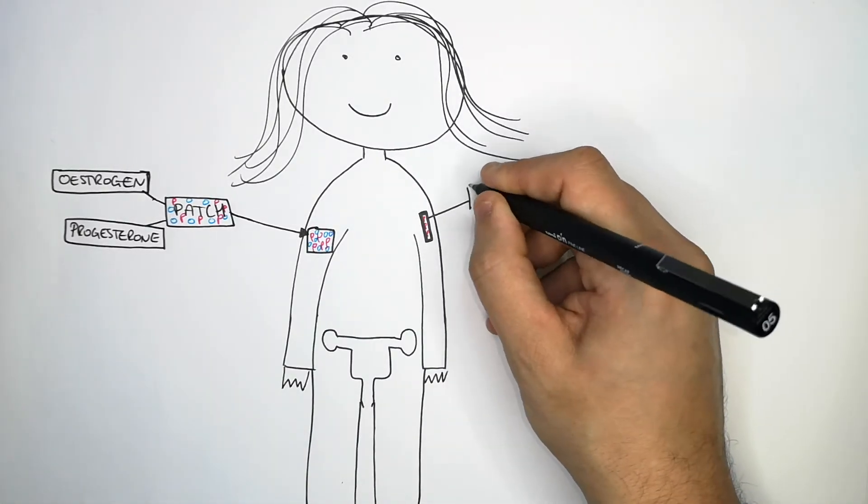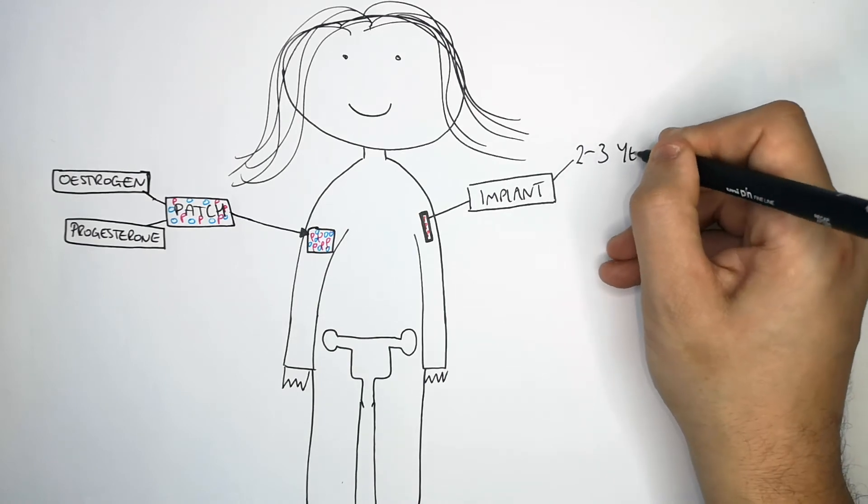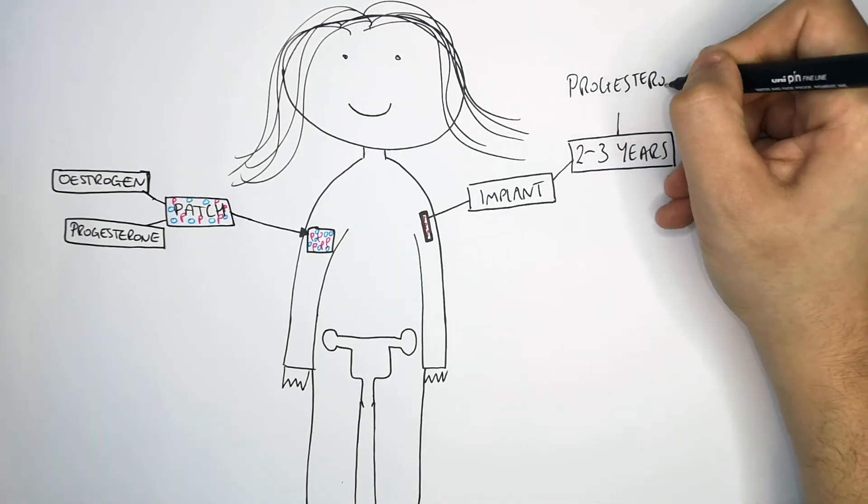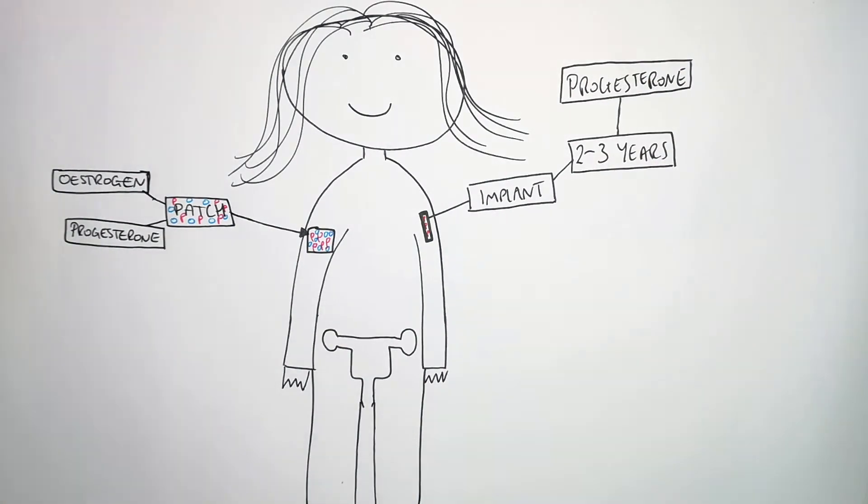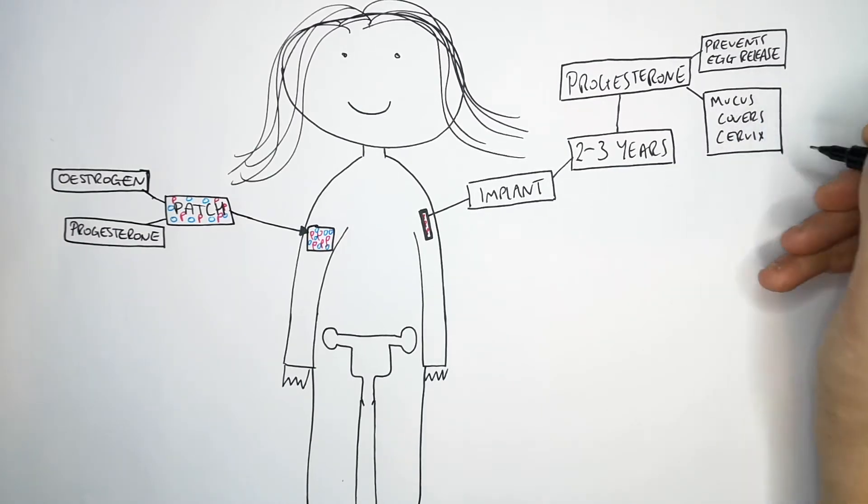The implant is implanted into the arm of a female and it contains progesterone which is continuously released for two to three years. This constantly high progesterone level will prevent egg release and also causes mucus to cover the cervix.